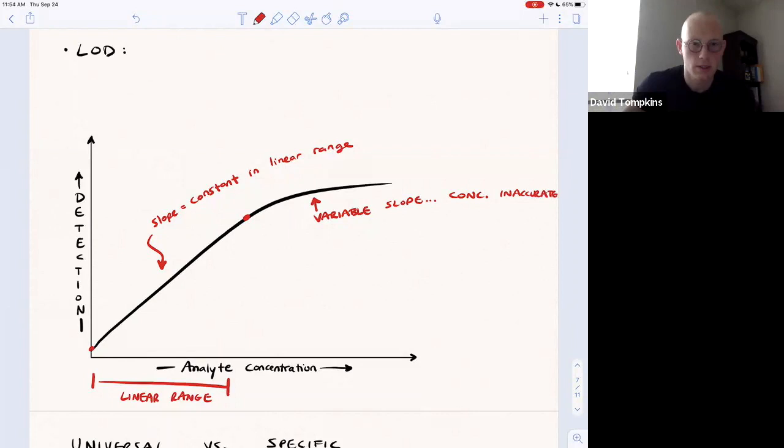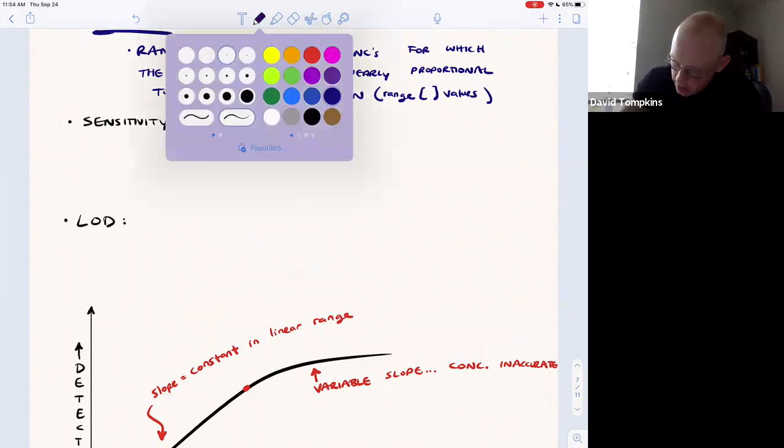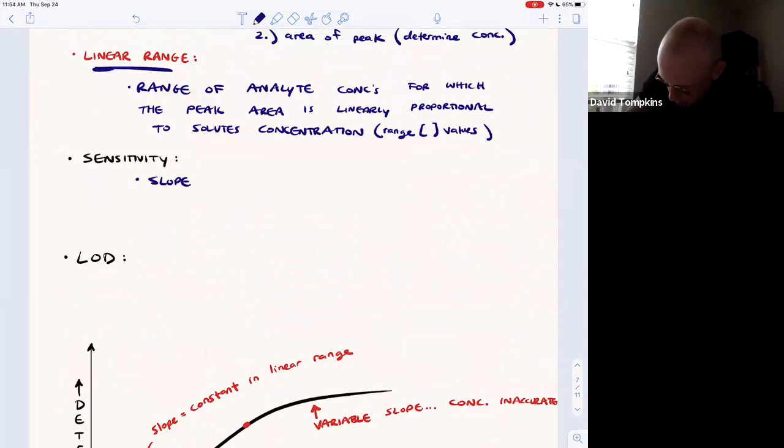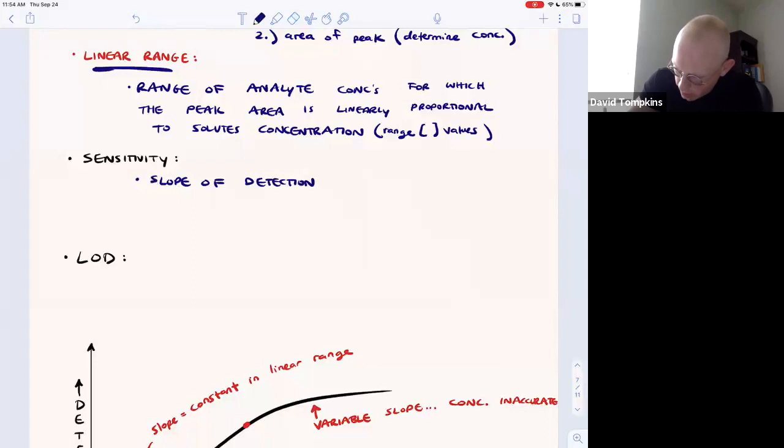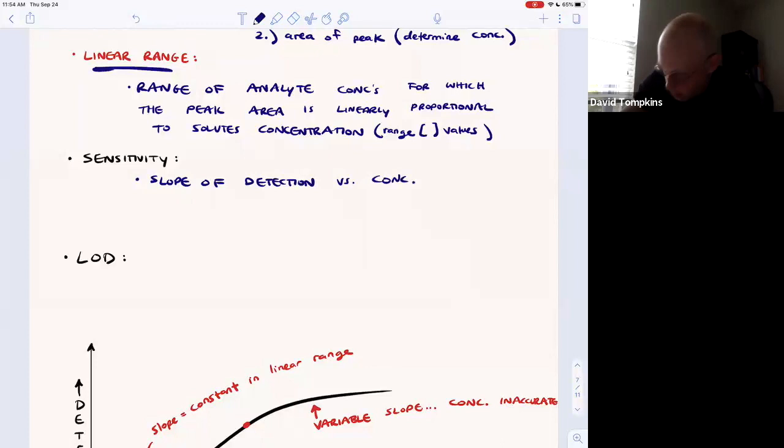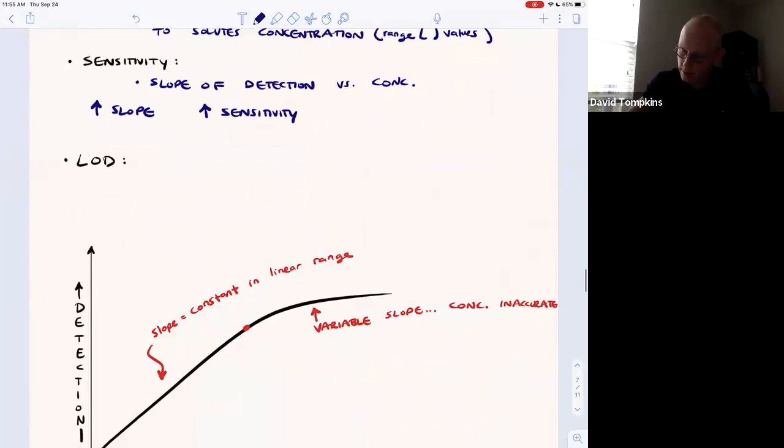Another term is the sensitivity. The sensitivity is the slope of the plot. The detection has some quantitative unit and that detection as it's plotted as a function of concentration gives a slope. If you increase the slope, you have a higher sensitivity.